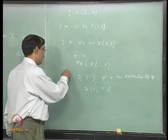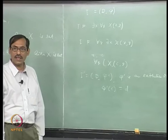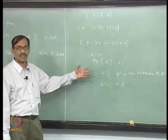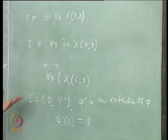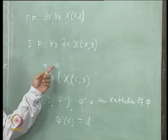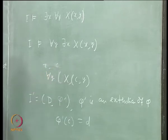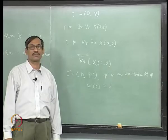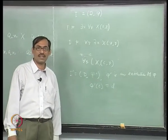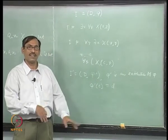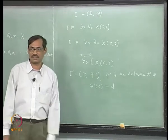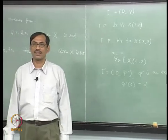Then, if ∃x∀y,φ(x,y) is satisfiable, ∀y,φ(c,y) will also be satisfiable under this new extended interpretation. In general, this is going to happen. At one step we proved it for one existential quantifier. If there are many, the proof will be by induction. This will be the crucial step in the induction process: up to n, then n+1 existential quantifiers — for the next one, you apply like this.